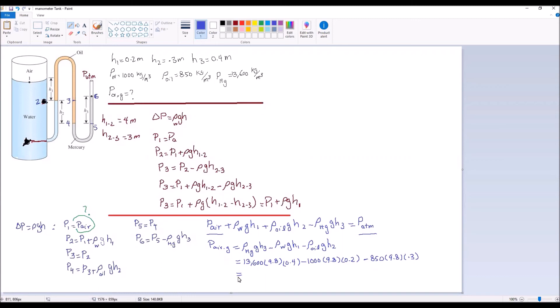So gauge pressure of air will be equal to 48,853 pascals or 48.853 kilopascals.